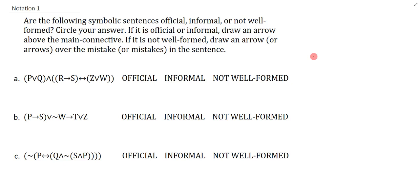So let's take a look at the first one, A. We have bracket P or Q and we have AND, R arrow S, biconditional Z or W. So what we can just sort of look at very quickly is whether or not we think this is a well-formed sentence in general. And so far there's no glaring mistakes.